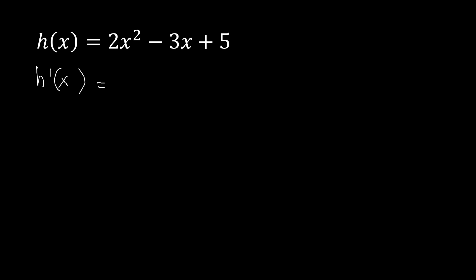Starting with 2x squared: there is a constant multiple, so we just copy the number 2, then bring down the power which is 2, multiply it with the constant, and copy the variable. The exponent becomes 2 minus 1. That is the power rule — you put down the exponent and subtract it by 1.